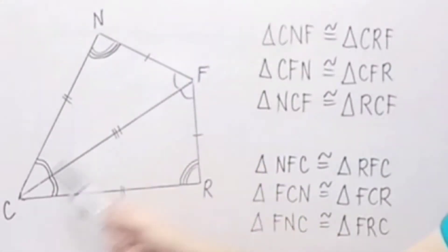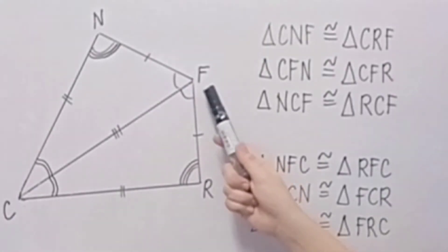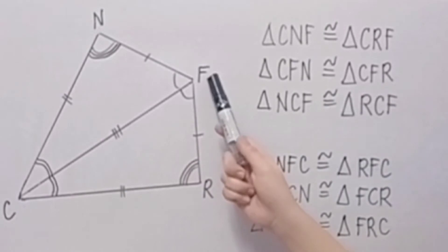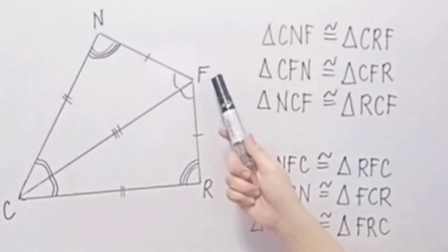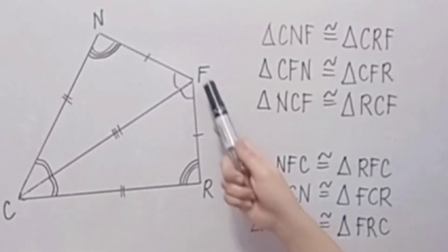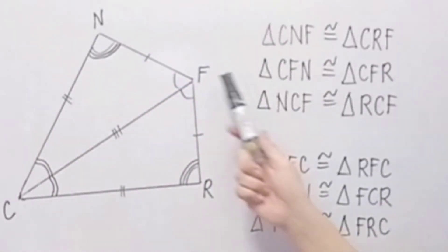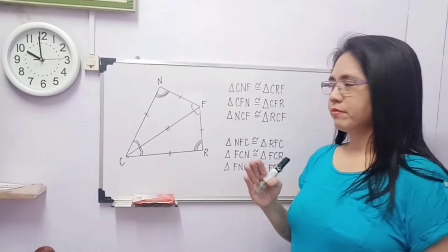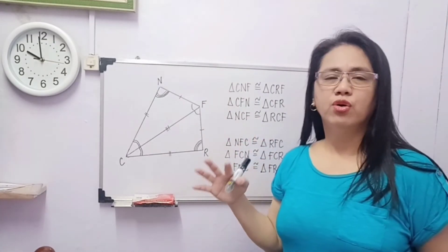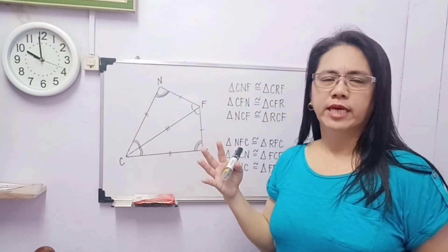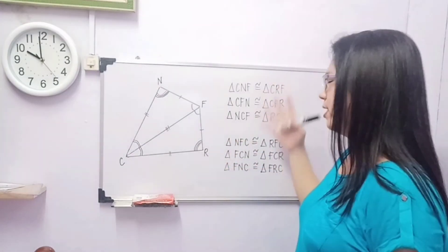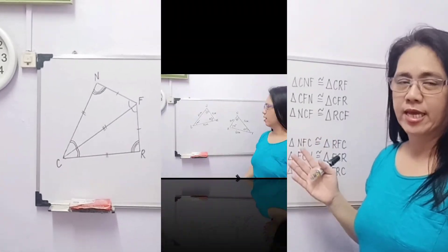And then we have triangle NFC is congruent to triangle RFC. Then triangle FCN is congruent to triangle FCR. And the last one, triangle FNC is congruent to triangle FRC. So kailangan, alam ninyo kung paano iname ang lahat ng mga congruent triangles. So any of these six combinations, pwede.